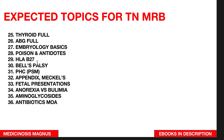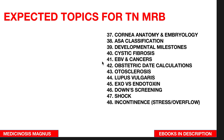Important commonly seen poisons and their antidotes. HLA-B27 associations. Bell's palsy. Primary health center structure in PSM. Appendix and Meckel's diverticulum. Fetal presentations in gynecology and obstetrics. Anorexia and bulimia. Aminoglycoside antibiotics — their mechanism of action. Corneal anatomy and embryology.